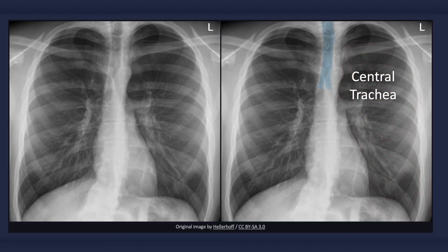As mentioned earlier, with a simple pneumothorax, the heart and mediastinal structures remain in their natural positions. For example, notice the central position of the trachea in this x-ray.